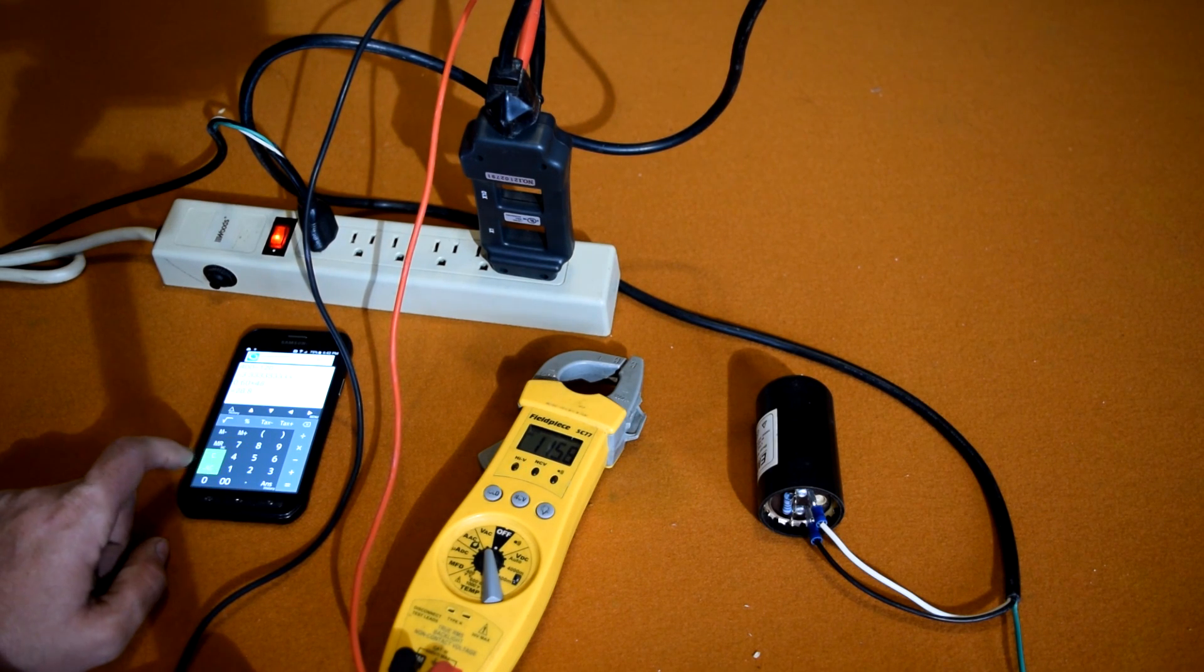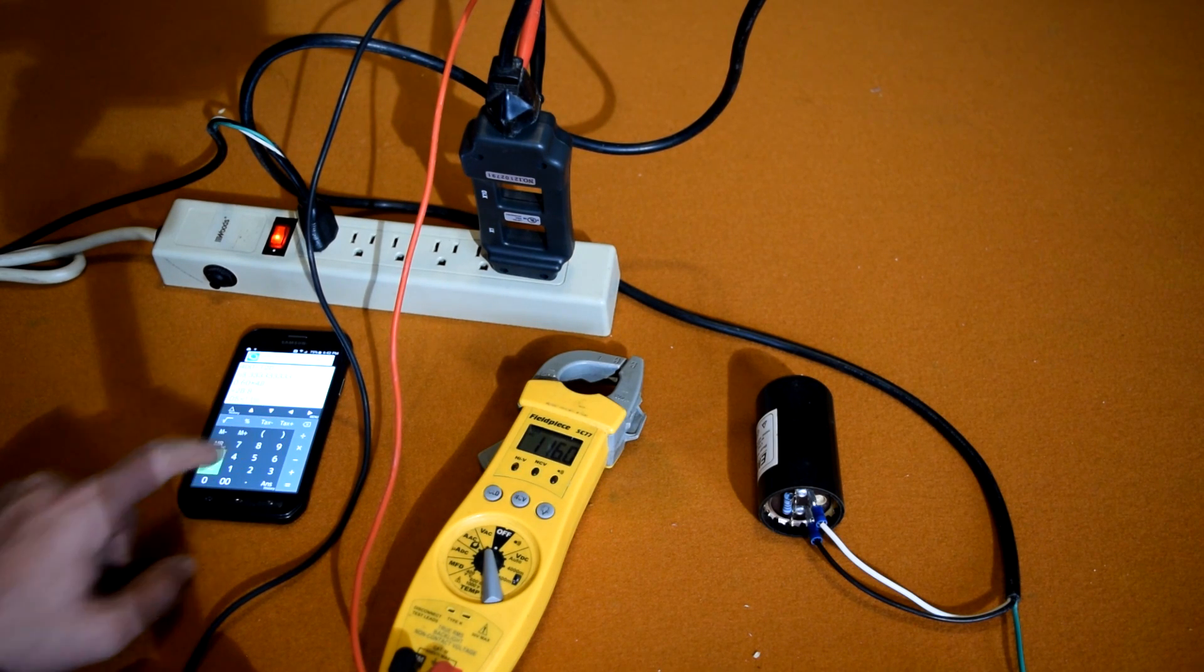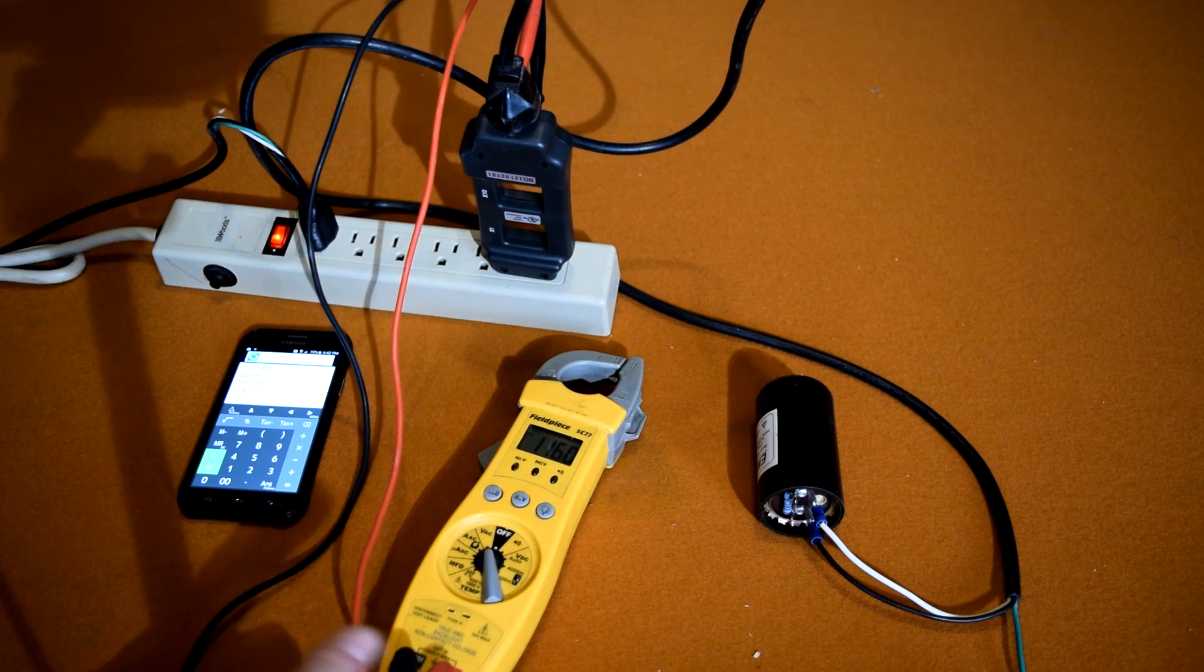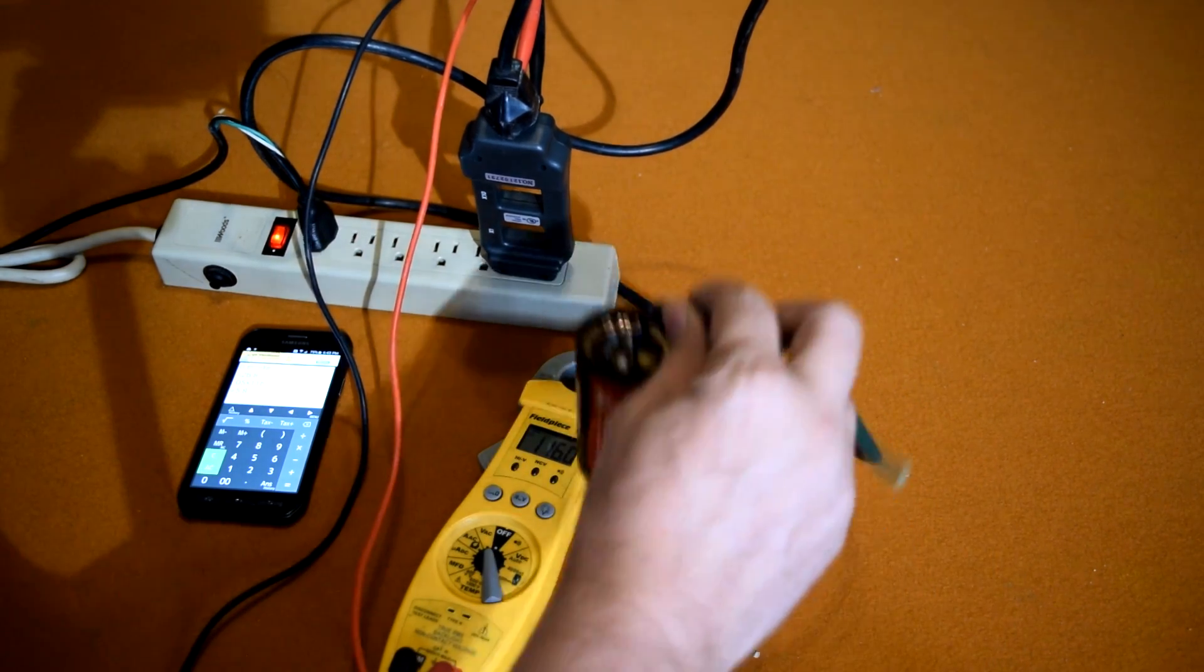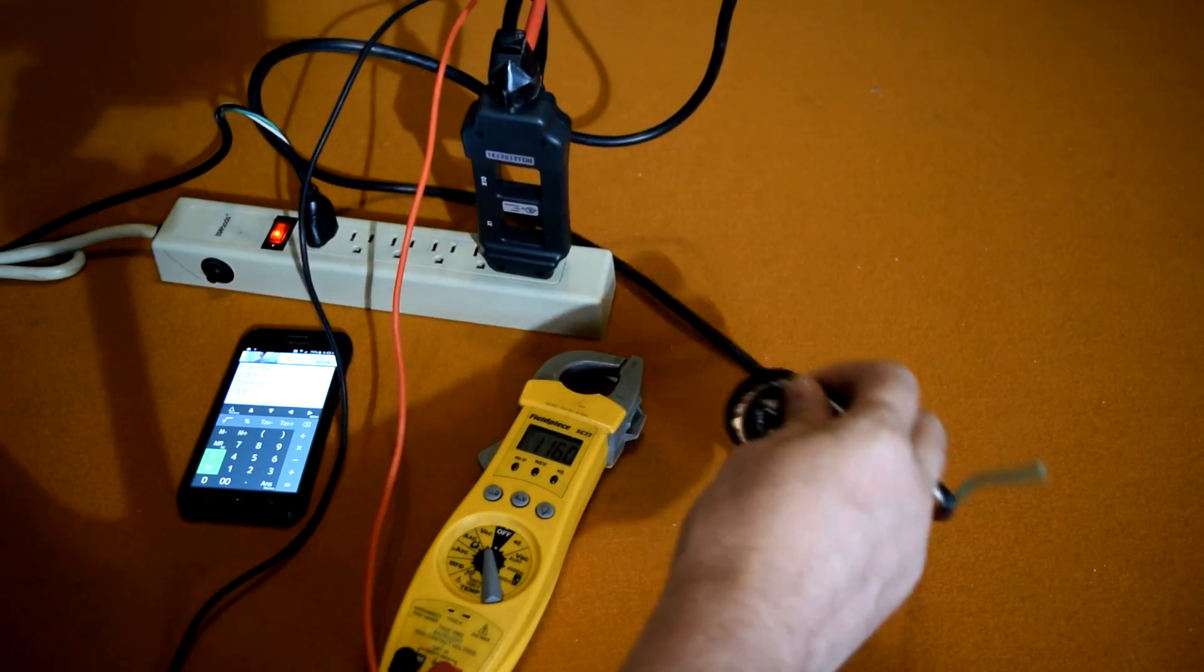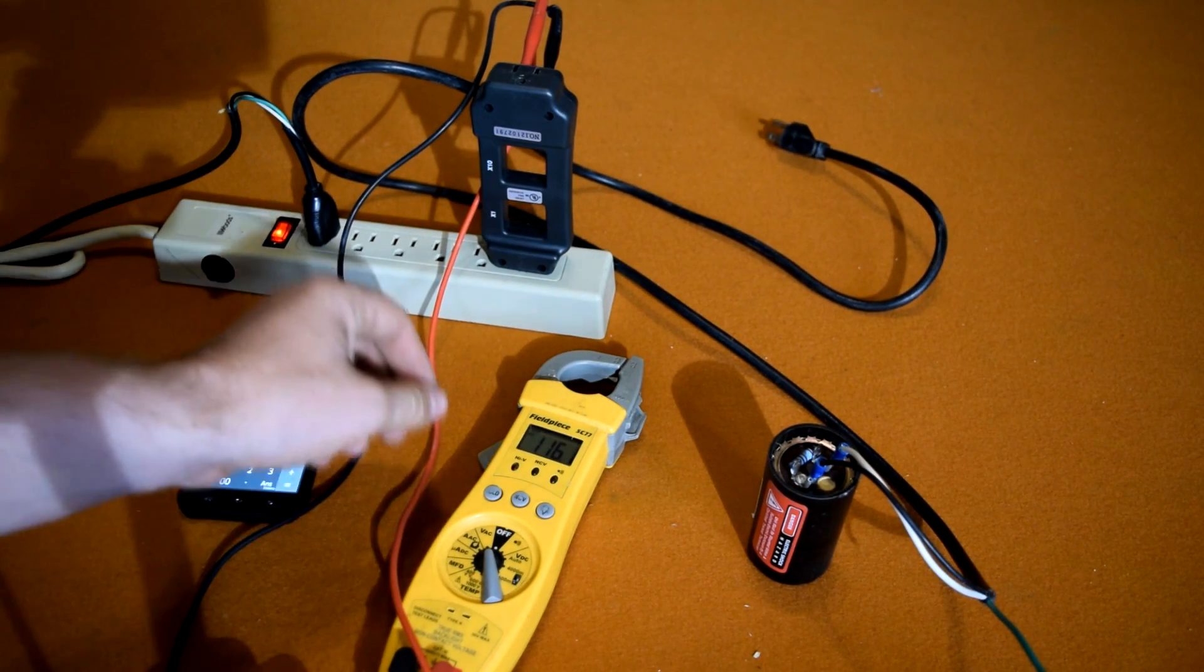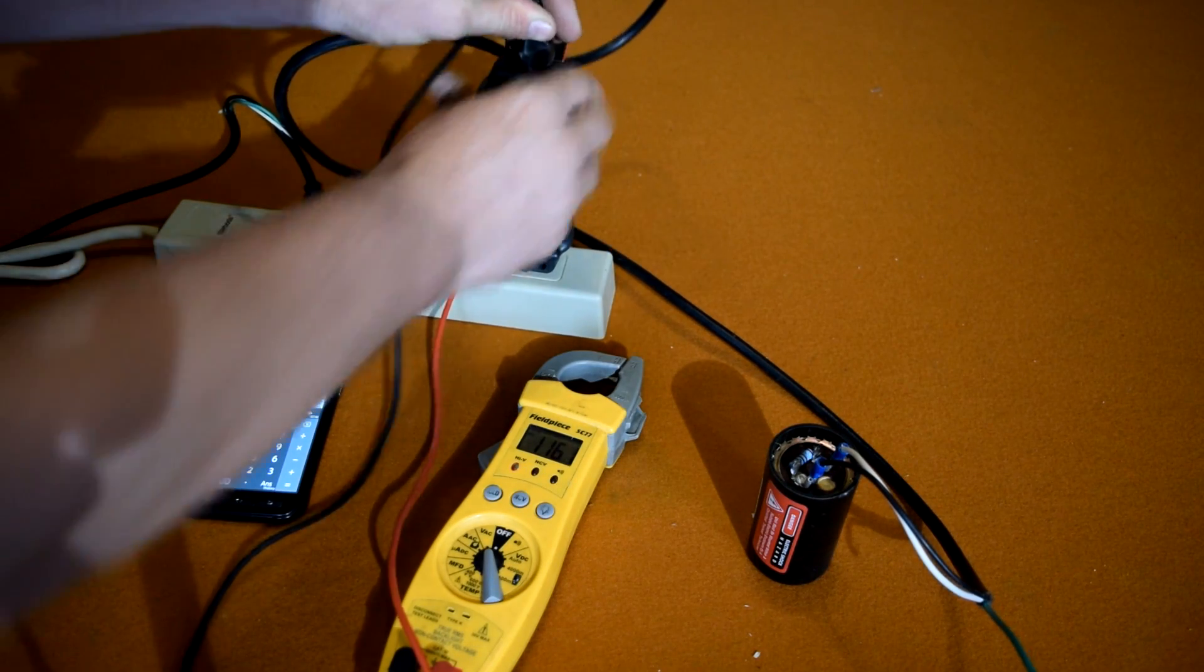So if we do 0.05 times 116, that's 5.8 watt power consumption. That uses more watt power just plugging this in than it does to run my kitchen lights. My kitchen lights use less power than that right there.